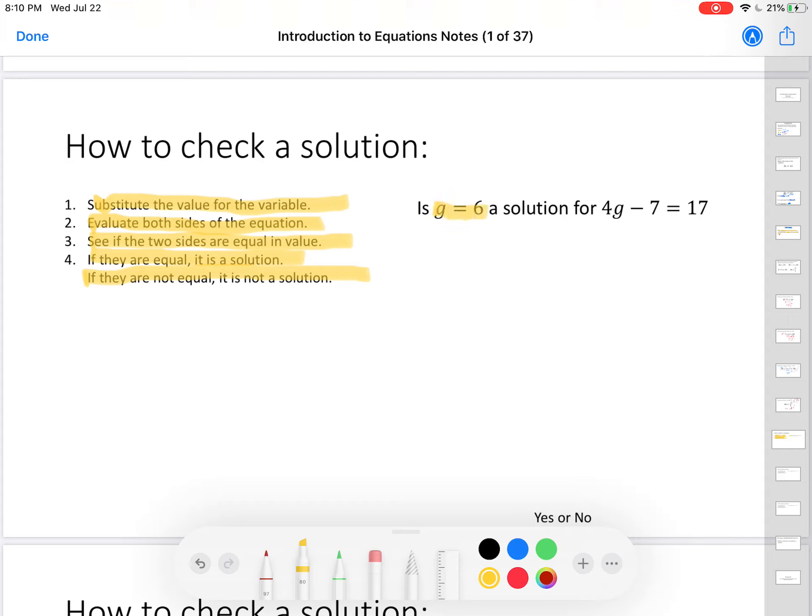Here's the question. Is g equal to 6 a solution for 4g minus 7 equals 17? Some of you might think that since g is 6, this turns into 46. You know better than that. This is 4 times g. So, this turns into 4 times 6 minus 7 equals 17. Let's see if that works. 4 times 6 is 24 minus 7 equals 17. 24 minus 7 is 17. Does 17 equal 17? Yes. Therefore, g equals 6 is a solution. So, I will circle yes. And this is how you show your work. You show the substitution step.